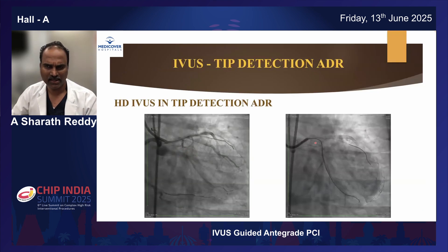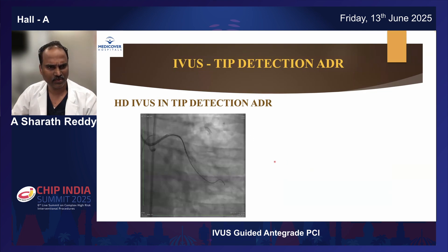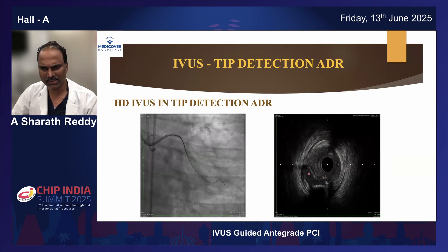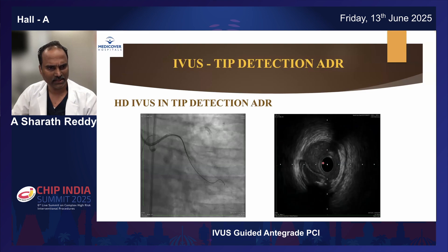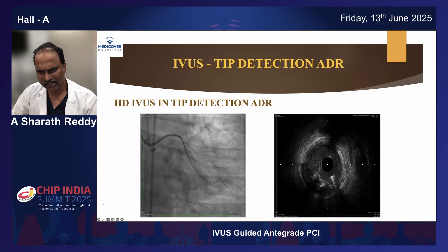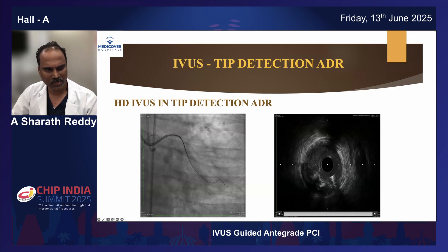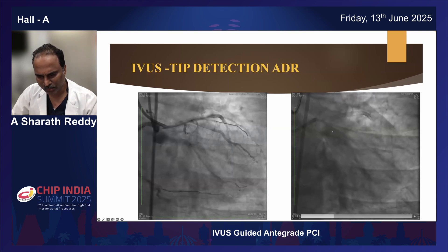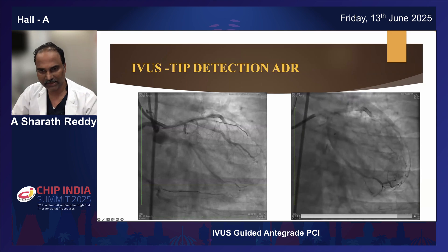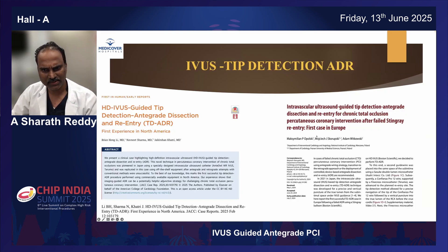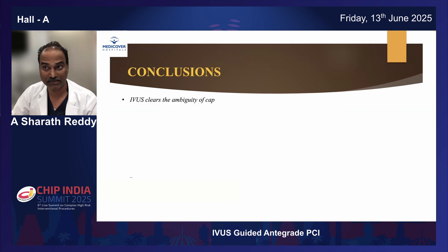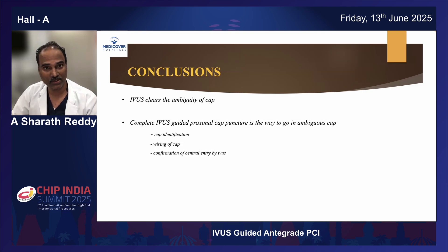This is IUS-guided antegrade wiring, but sometimes we can also do a tip detection ADR. Like in this case of LCX total occlusion, you can see the wire went completely subintimal till the end, and we decided to go ahead with tip detection ADR. You can see this is the true lumen and this is entirely false lumen where IUS is sitting. This is a wire which is into the true lumen, which by tip detection we directed, and subsequently we only did POBA. Since there was a huge subintimal hematoma, we achieved a good result. We can do the tip detection ADR with even Boston IUS since we don't have the Angio IUS catheter in India. These are case reports from both Europe and North America with first experience of tip detection ADR with OptiCross catheters.